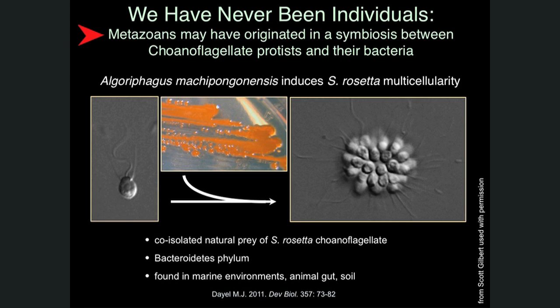There's even this idea that perhaps the whole idea of animal multicellularity may, in fact, be a symbiotic phenomenon. Here's a little choanoflagellate protist swimming along all by itself. But when it is cultured with Algoriphagus bacteria, it changes its living habit and grows in the colonial form. So even perhaps the development of animal multicellularity is a phenomenon that may be due to symbiosis with microbiota.